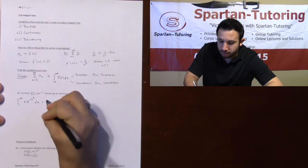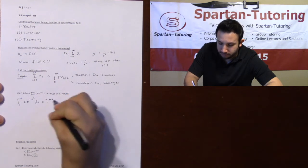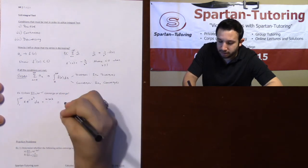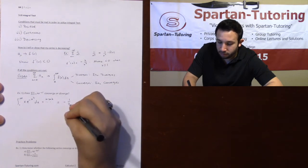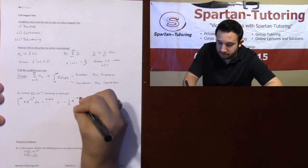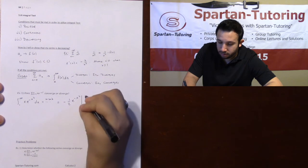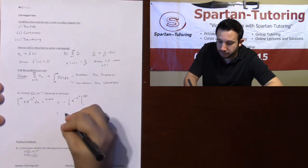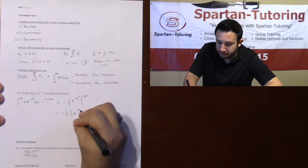Which, if you did your u-sub correctly—hopefully by now we're comfortable with u-sub—if you did your u-sub correctly, this will turn into negative one-half e^(-x²) going from 1 to infinity. So this is negative one-half times e^(-infinity) minus, and plugging 1 into there I get e^(-1).